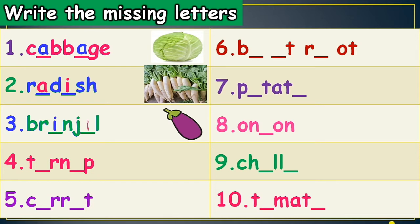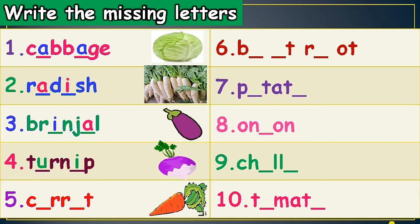Fourth one, it is turnip — T U R N I P, turnip. Fifth one, it is carrot — C A R R O T, carrot. Sixth one, it is beetroot — B E E T R O O T, beetroot.